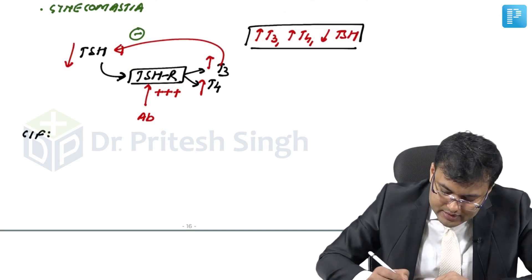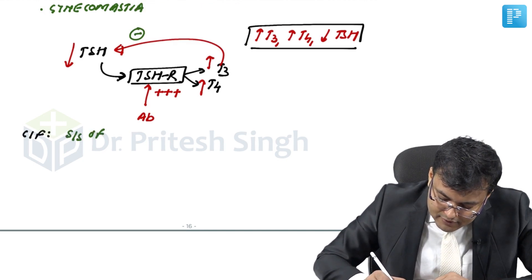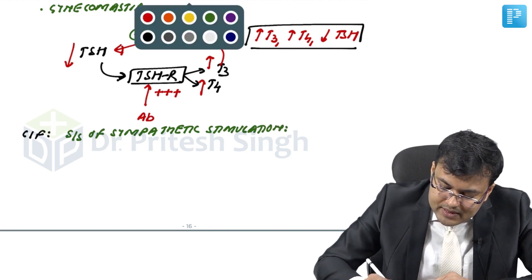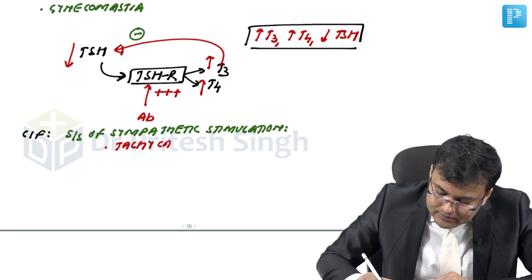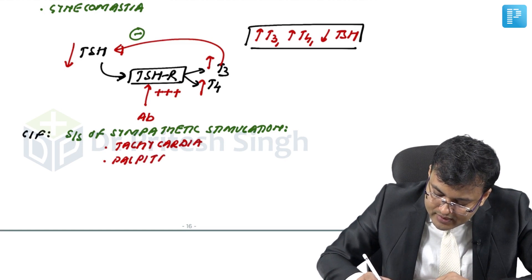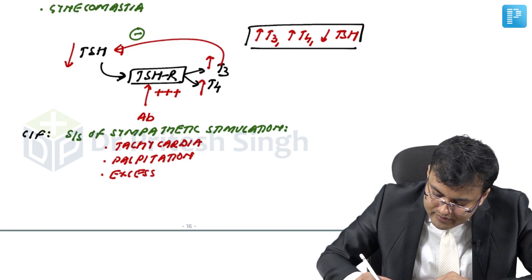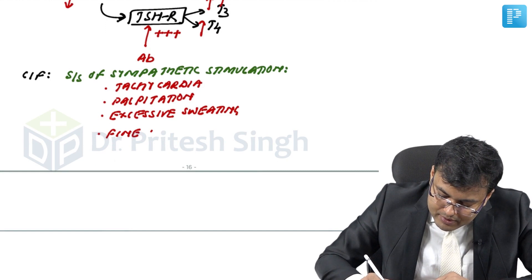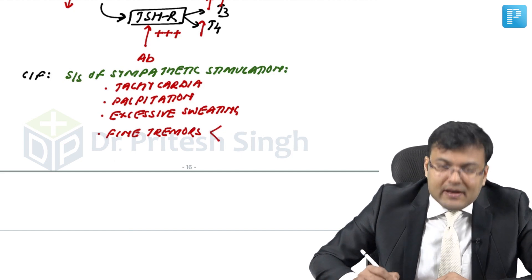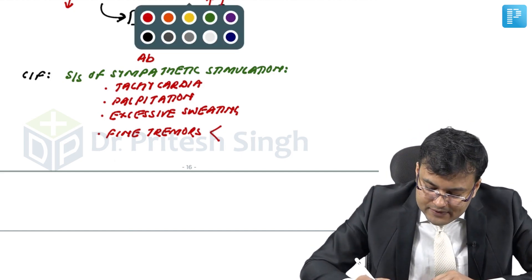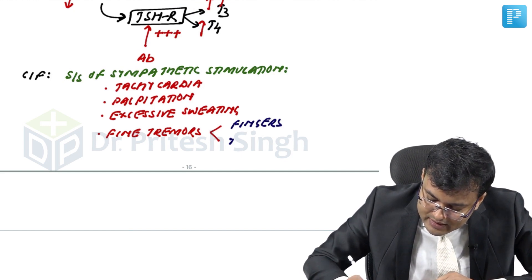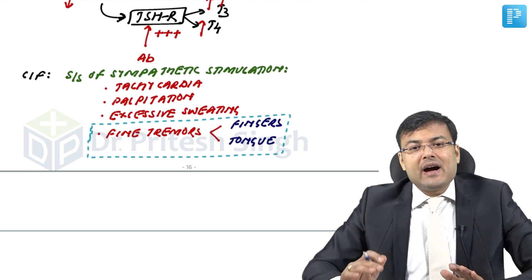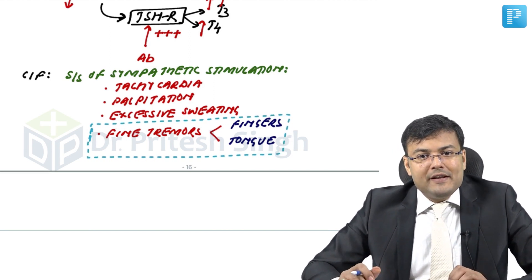Clinical features: Signs and symptoms of sympathetic stimulation include tachycardia, palpitation, excessive sweating, and fine tremors. These fine tremors are seen in the fingers and tongue — this is a frequently asked exam question: what kind of tremors are seen (fine tremors) and exactly where (fingers and tongue).